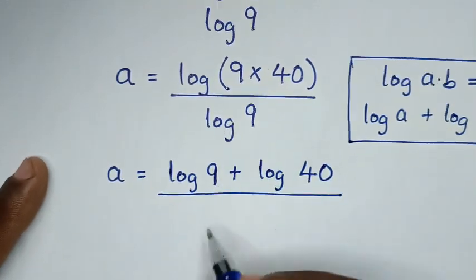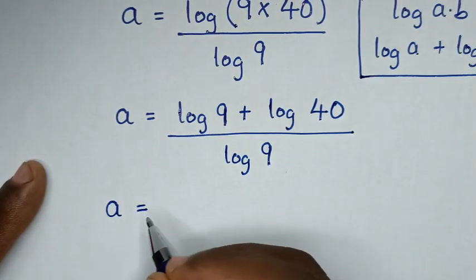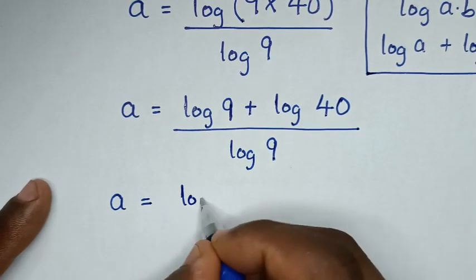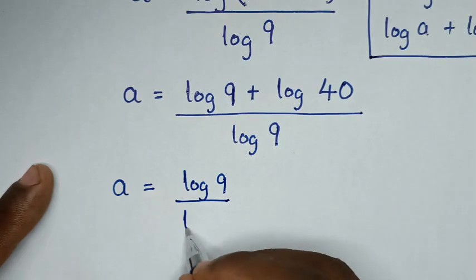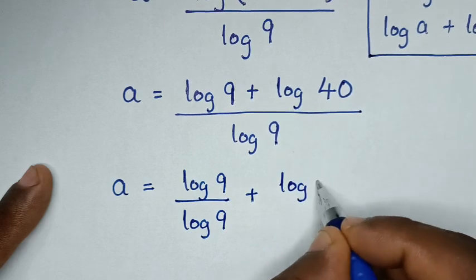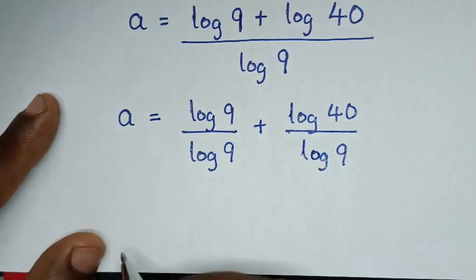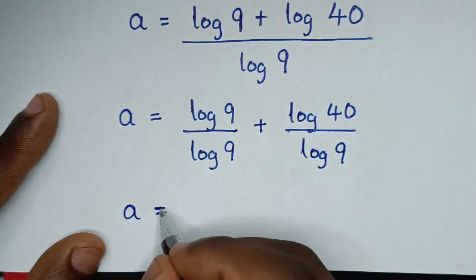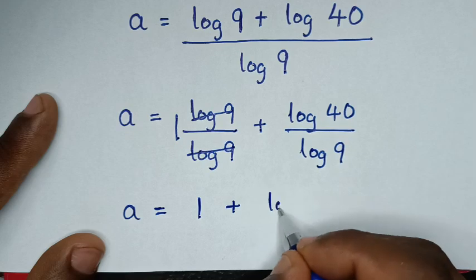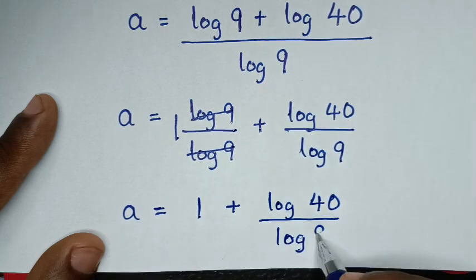Then dividing by log of 9 in both parts, it will be log of 9 over log of 9 plus log of 40 over log of 9. Here log of 9 divided by log of 9 is 1, so it will be 1 plus log of 40 over log of 9.